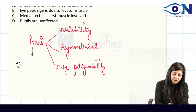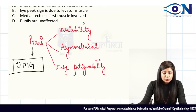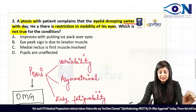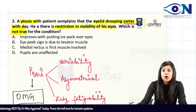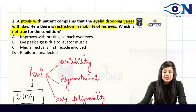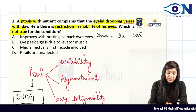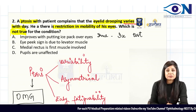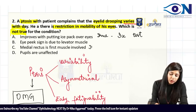These three features point to ocular myasthenia gravis — this is a very important vignette. Since there is variability within the day, we know this is ocular myasthenia gravis. Now for the answer options: option one — improves with putting an ice pack over the eye — this is true, the ice test is valid here. Option two — eye peek sign is due to levator muscle — I'll come back to this. Option three — medial rectus is the first muscle affected — this is also true.